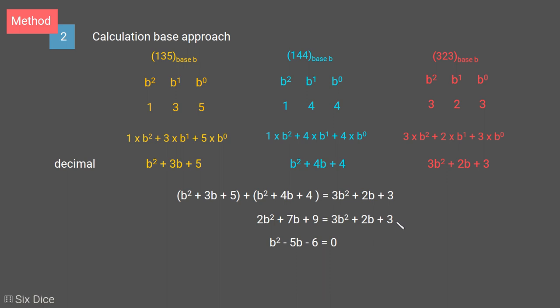If we factorize this, we get b minus 6 times b plus 1 equals 0. So two values for b: b equals 6 and b equals minus 1.